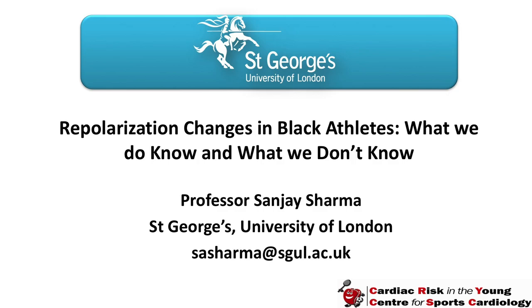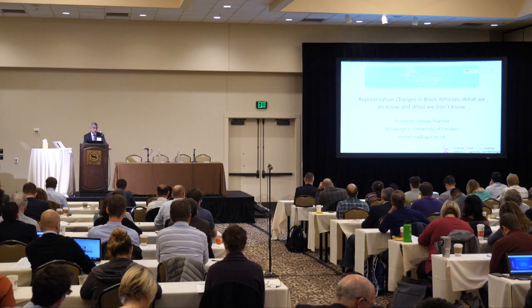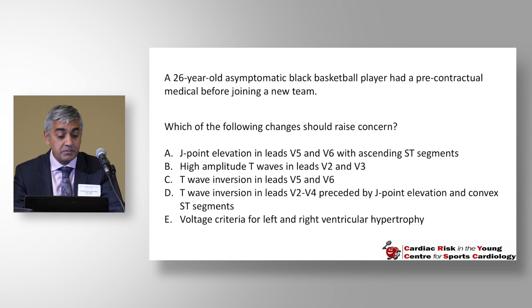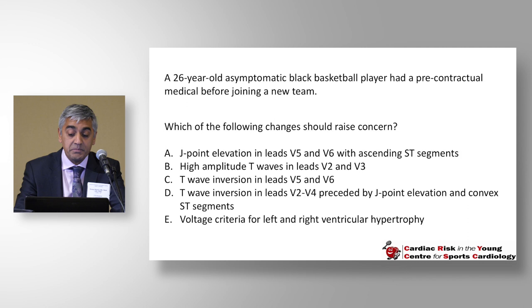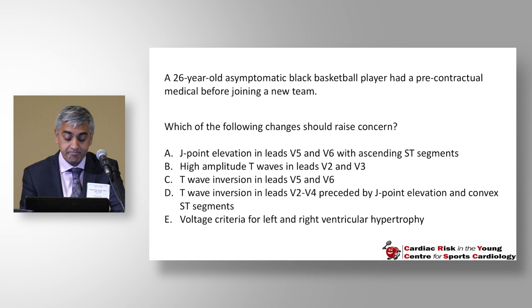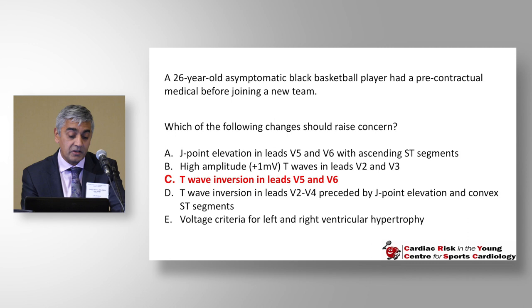I'm going to talk about repolarization changes in black athletes — what we know and what we don't know. A 26-year-old asymptomatic black basketball player had a pre-contractual medical before joining a team. Which of the following changes should raise concern? The right answer is C: T-wave inversion in leads V5 and V6.